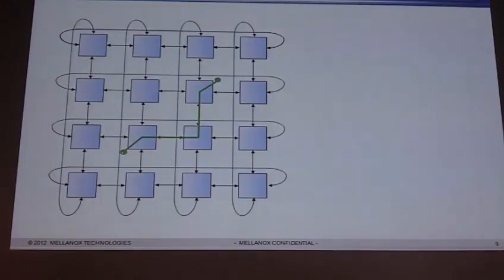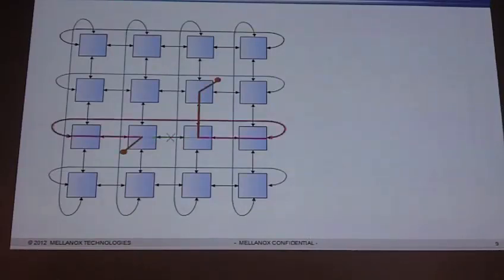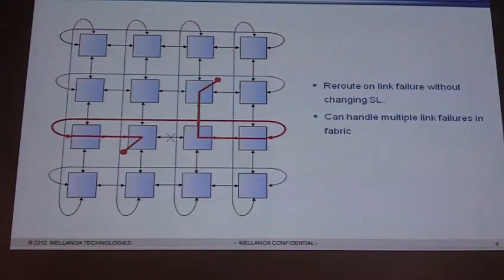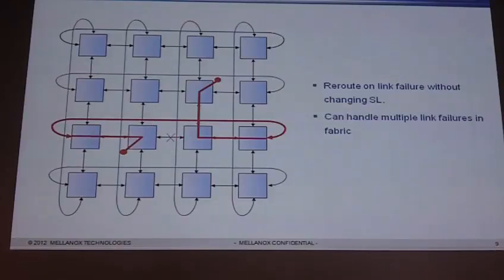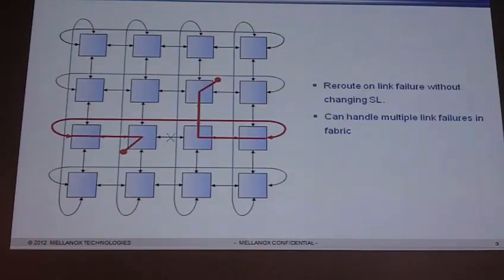Link failure example: I've got a server hanging off of a node going up to another node. I go in my X direction first, then my Y direction. If this link gets cut, I have to reroute — I go around the other way. Say the dateline was here: before I wasn't crossing it, so I would have used SL0. Now all of a sudden I'm crossing the dateline, but I don't change my SL. Since the link already broke, that broke my loop — the need to use a particular virtual lane to break the loop went away because the link already broke. So I can reroute without changing the SL and handle multiple link failures this way.